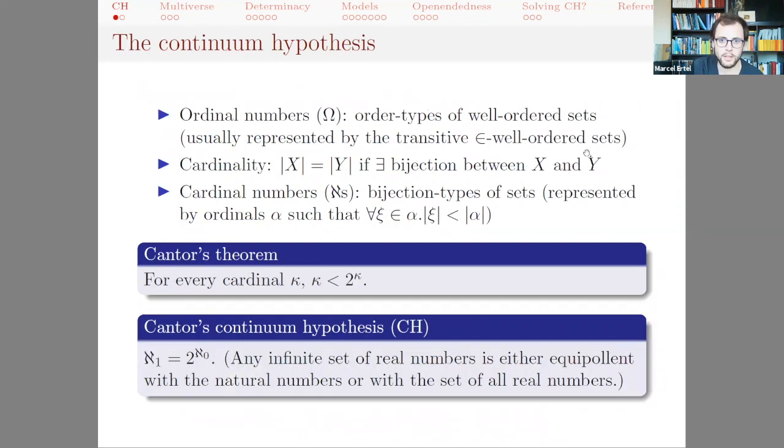So very briefly, Cantor introduced the ordinal numbers, whose totality he signified with a large omega, as the order types of well-ordered sets. In axiomatic set theory one usually represents these by the transitive epsilon well-ordered sets. This would be the von Neumann ordinals.